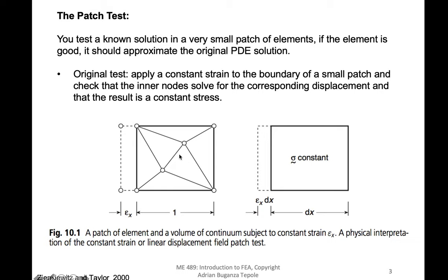That would be an easy thing to check: you apply a uniform deformation at the boundary and you solve your problem, and you want to check whether or not you get a constant stress. If you do, that's good. If you don't, then you know that something's wrong — that your element is not able to represent this simple deformation. So that's one thing that you want to check.